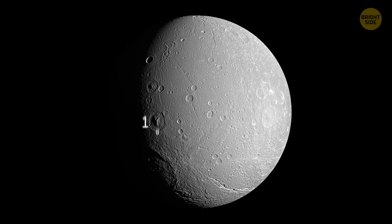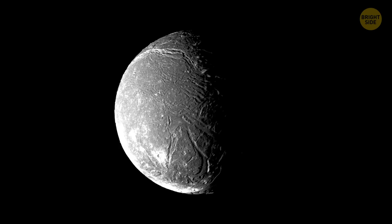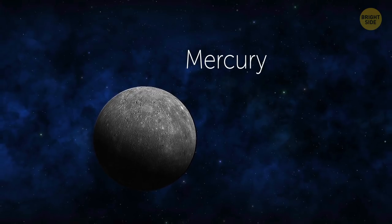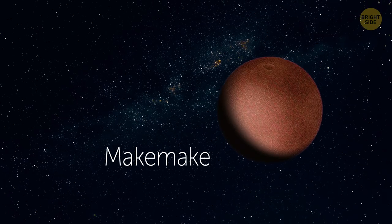There are 181 moons in our solar system orbiting planets, yet two of those planets don't have any. That's Venus and Mercury. The only two dwarf planets that don't have natural satellites are Ceres and Makemake.